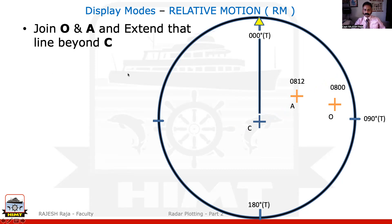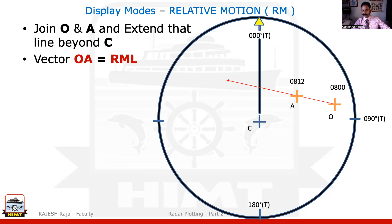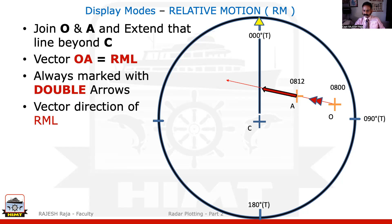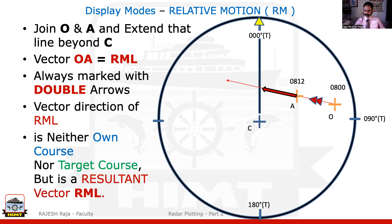Please join O and A and extend it beyond Charlie. This vector OA is the first vector we got and it is called the Relative Motion Line — RML. We already discussed relative motion line and relative line of approach in the previous video. The RML is always marked with double arrows — with your pencil draw two arrows. This vector has got a direction. That direction is very important to realize: it is neither your own course nor the target's course. It is the resultant of those two vectors — it is called the resultant vector.